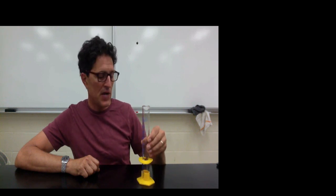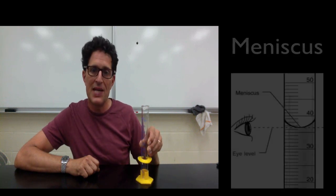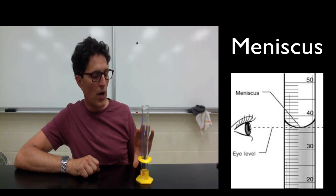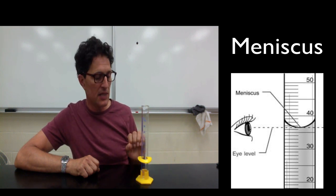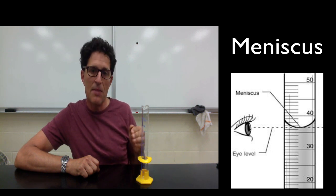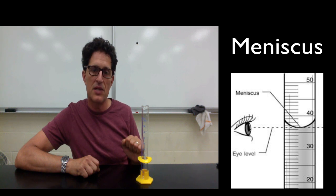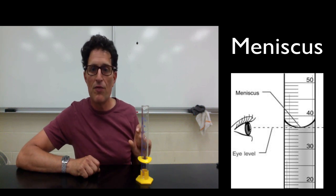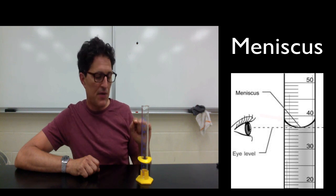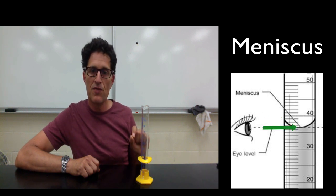The third thing is that you have to read from something called the bottom of the meniscus. Now, when a solution or water is placed into a graduated cylinder, the properties of the water or the solution tend to make it want to climb up the sides of the graduated cylinder. You want to avoid reading the top of the meniscus and read from the bottom of the meniscus where the true volume is.